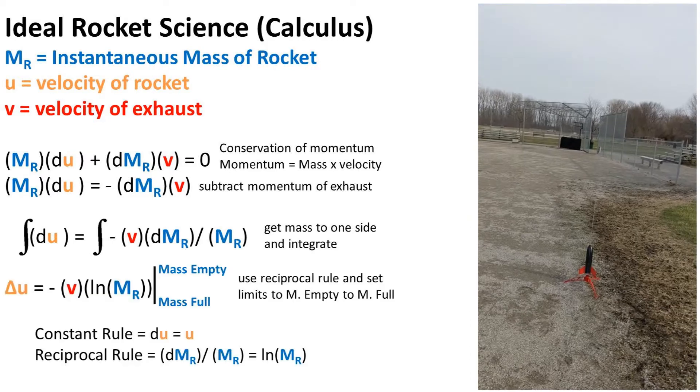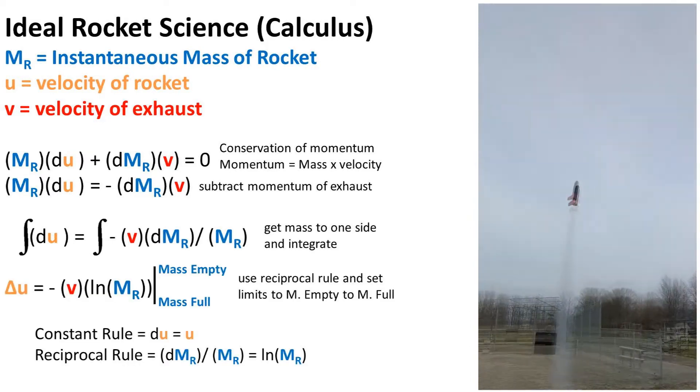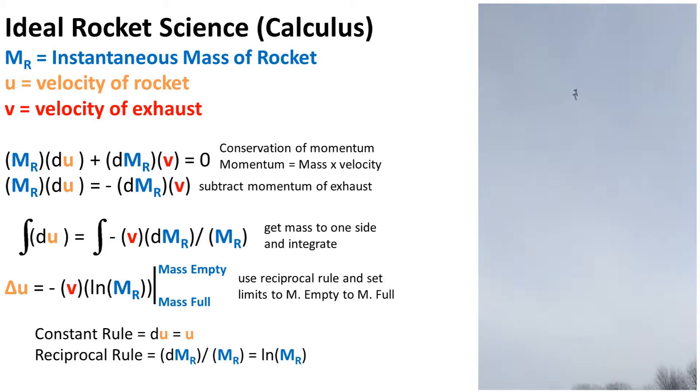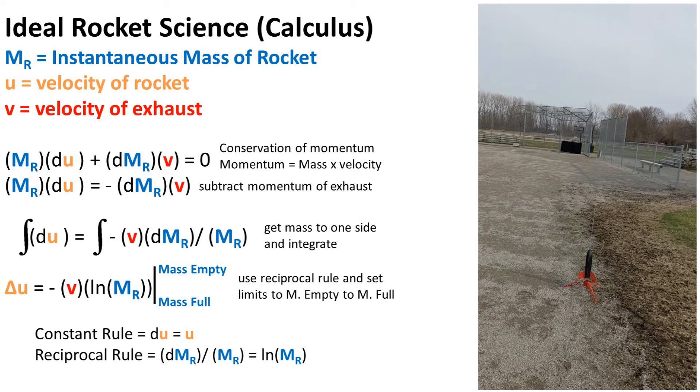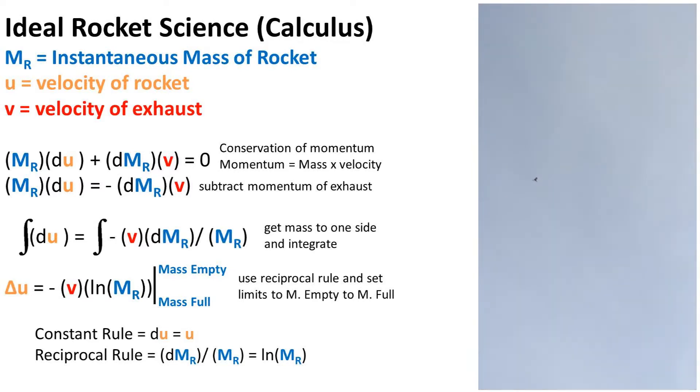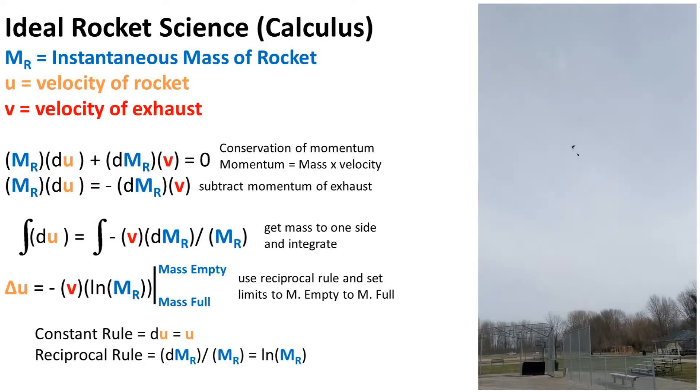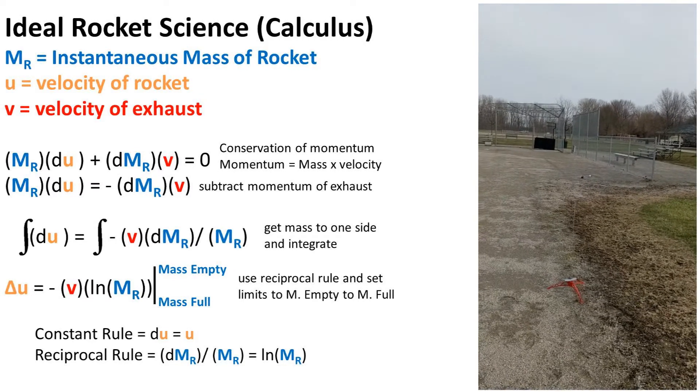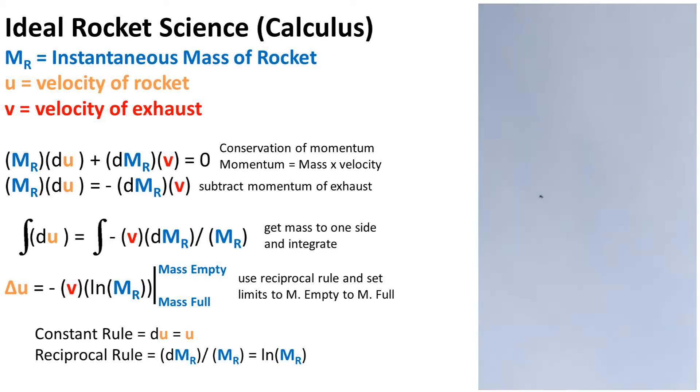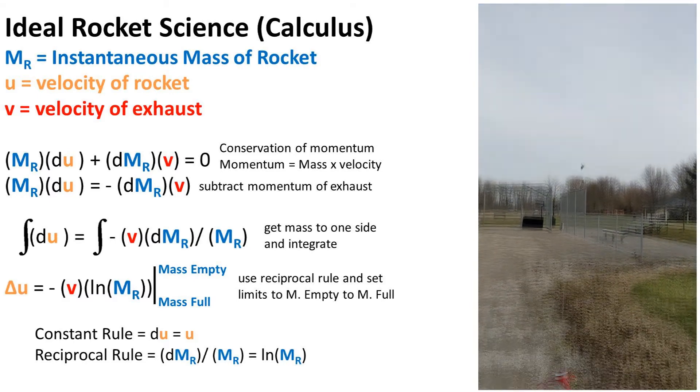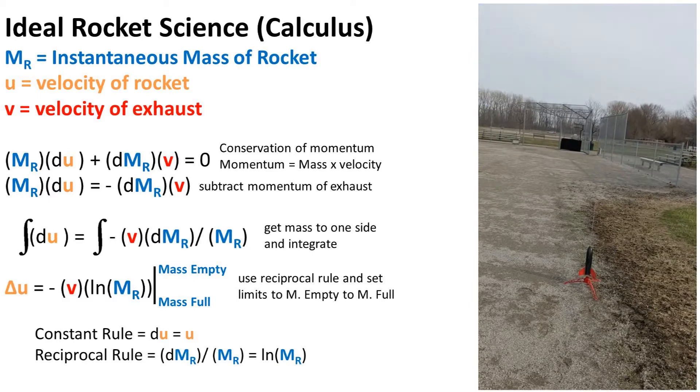We can use the constant rule on the velocity side of the equation and the reciprocal rule on the mass of the rocket side. We get that the change in velocity of the rocket is equal to the negative velocity of the exhaust times the natural logarithm of the mass of the rocket, set to the limit of the mass of the rocket empty to the mass of the rocket full, so final state to initial state.